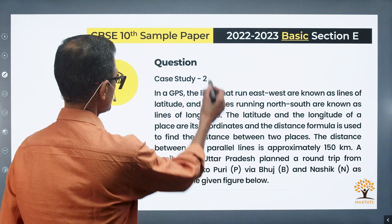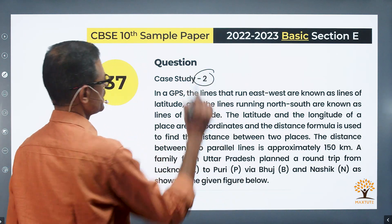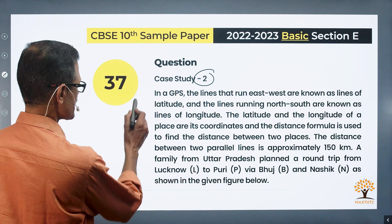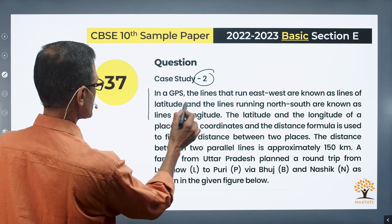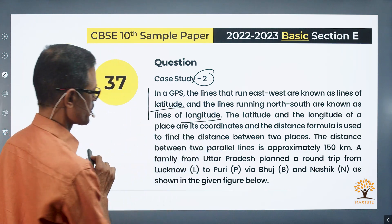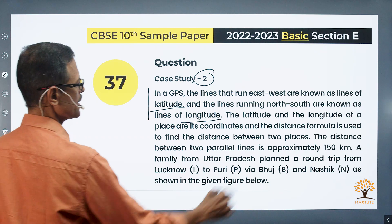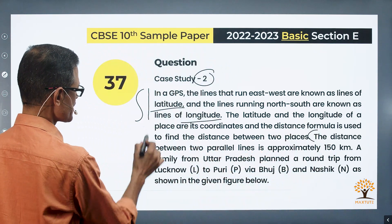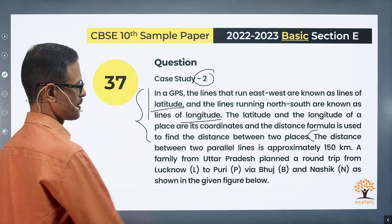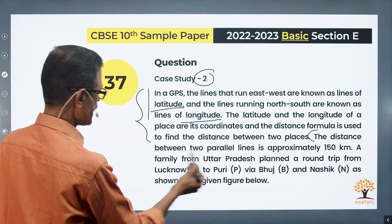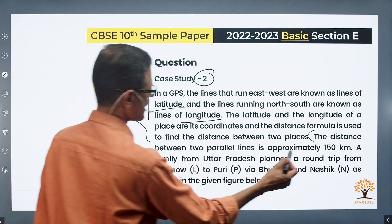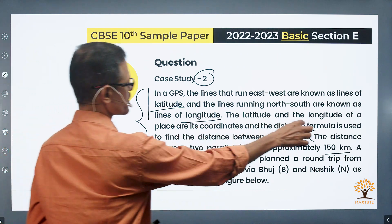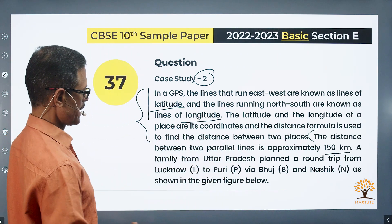Question number 37, this is case study 2. This question is a coordinate geometry question. The horizontal lines are latitudes and vertical lines are longitudes. The distance between two parallel lines is approximately 150 kilometers. Coordinates and the distance formula is what we need to use.